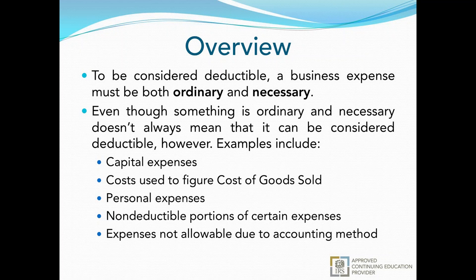Examples where ordinary and necessary doesn't equal deductible include capital expenses, costs of goods sold, personal expenses, non-deductible portions of certain expenses, and expenses not allowable due to the accounting method chosen. Some types of expenses get delayed until a future time; some have a portion that is just lost and you never get it back. When I talk about deductible in the case of a business expense, I'm talking about something that applies to a specific year and a specific economic activity. Capital expenses, for instance, are deductible through depreciation.